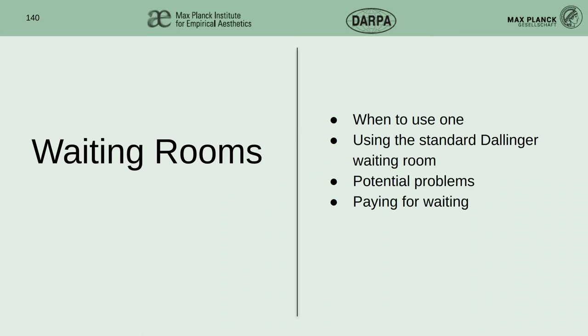I was going to talk briefly about two side topics, features you can use with Dallinger. One is waiting rooms, and the other is web sockets. These are both optional features that make sense in a subset of experimental contexts. So let's talk about waiting rooms first.